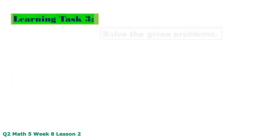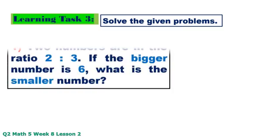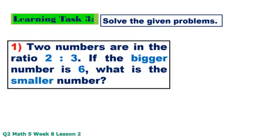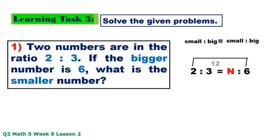Learning Task 3: Solve the given problems. Number 1: Two numbers are in the ratio 2 to 3. If the bigger number is 6, what is the smaller number? Small to big: 2 to 3 equals N to 6. 2 times 6 equals 12, 3 times N equals 3N. 12 divided by 3 equals 4.